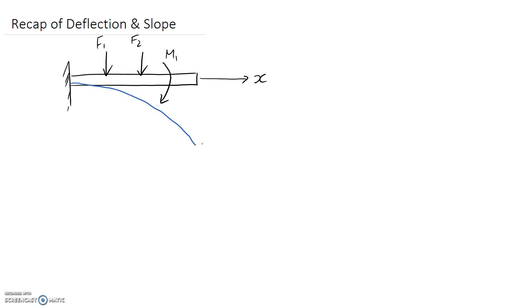So this curve here describes the deflection and we give it the symbol V. We can also figure out the slope of the beam at any point that we're interested in, and we're going to call that theta.